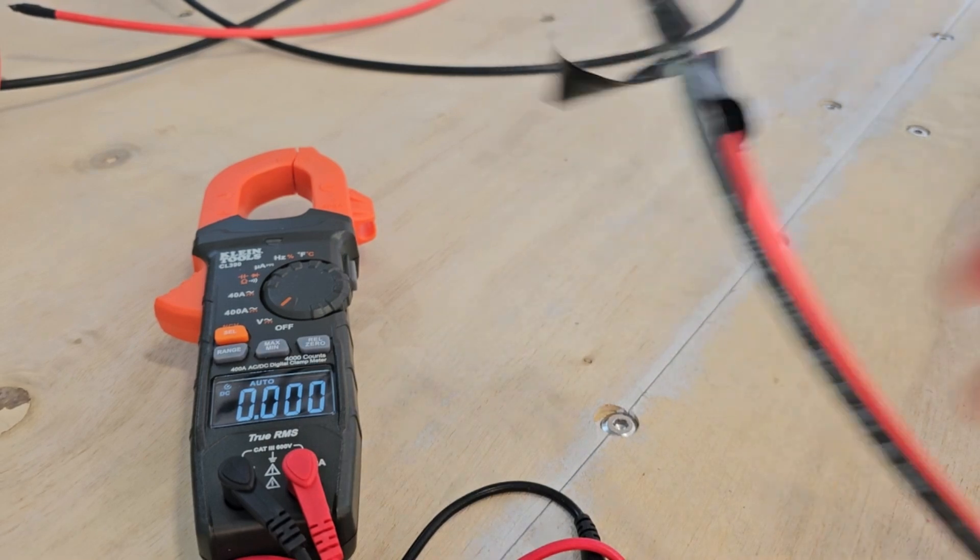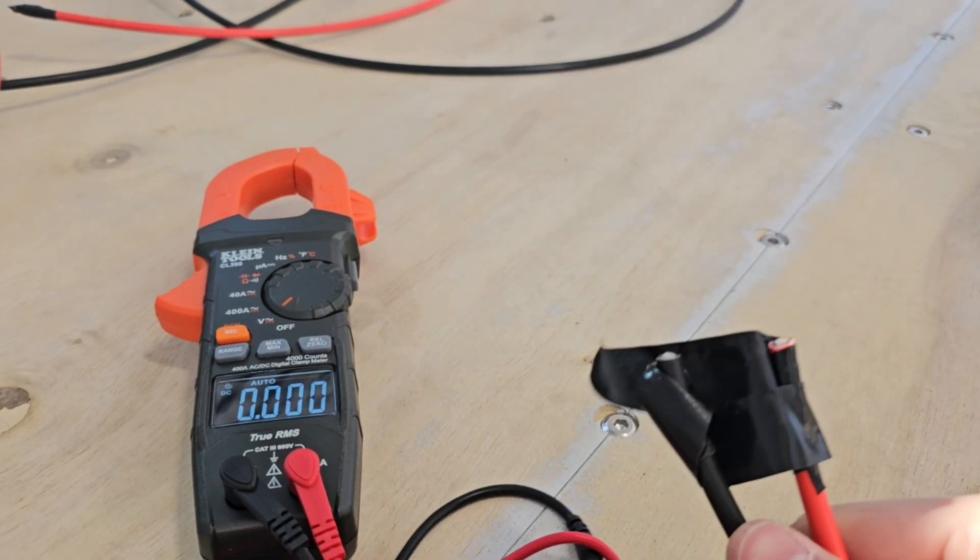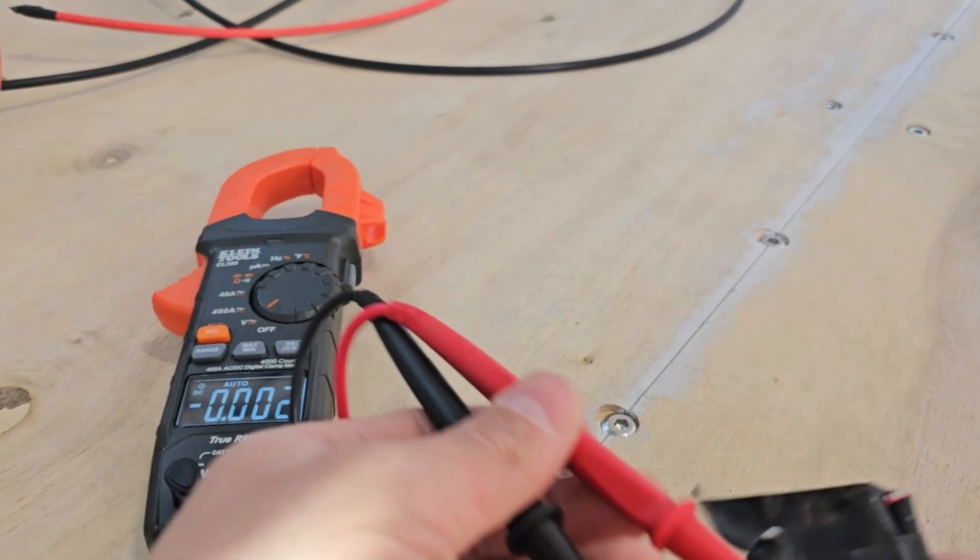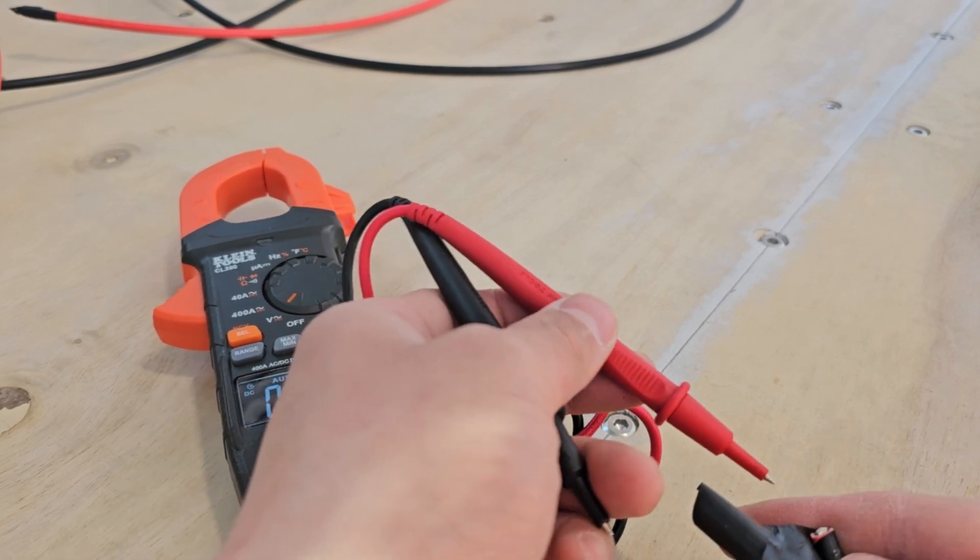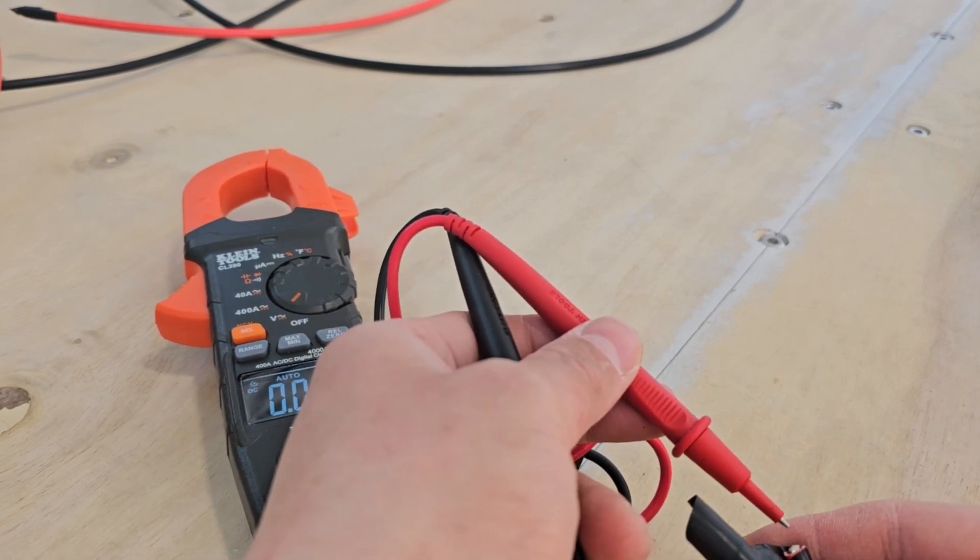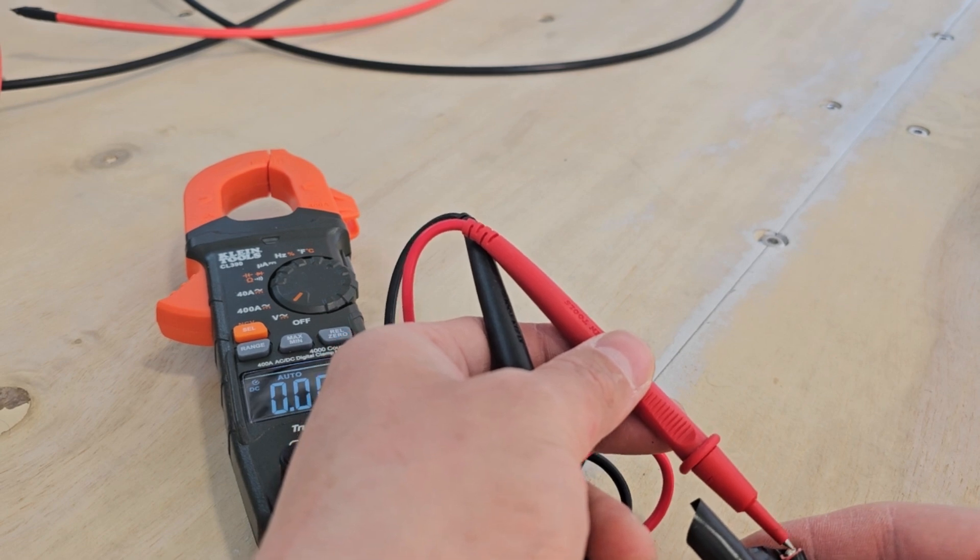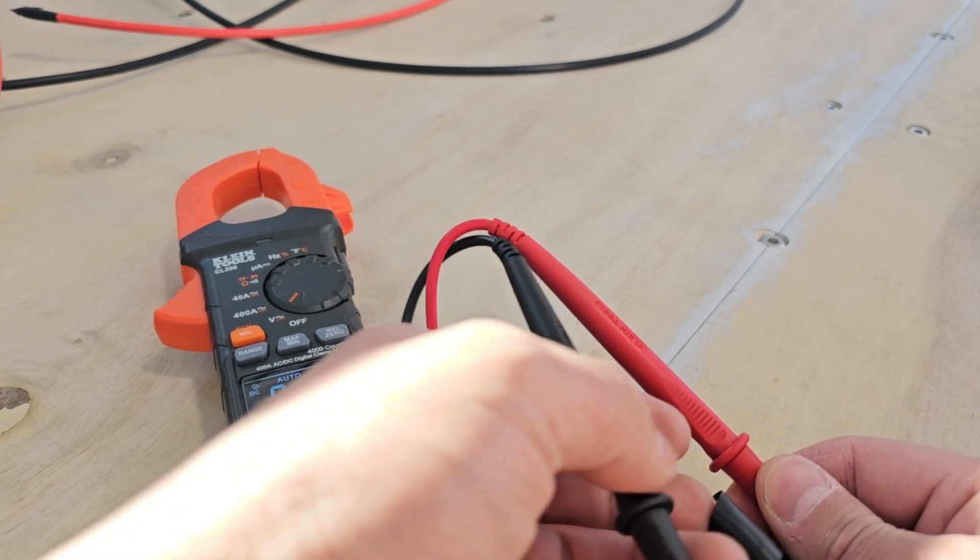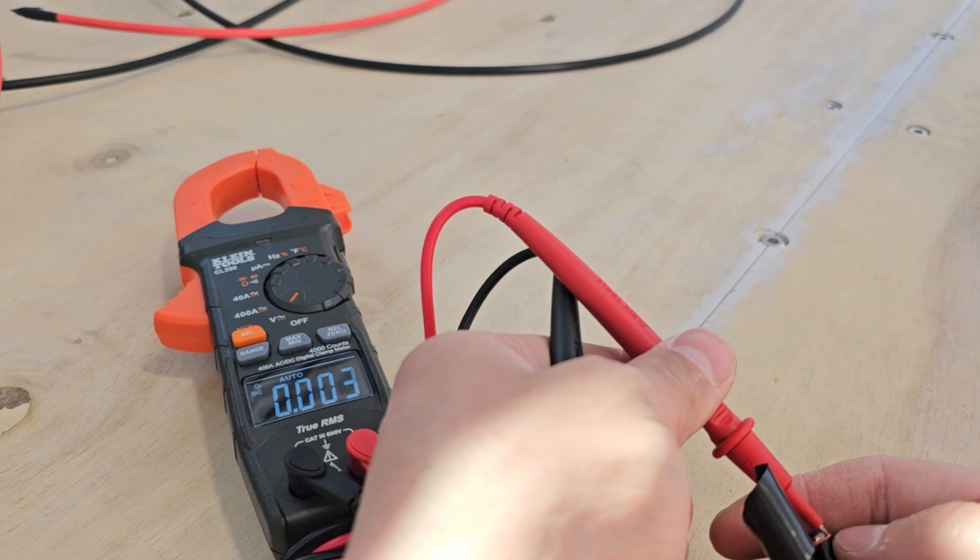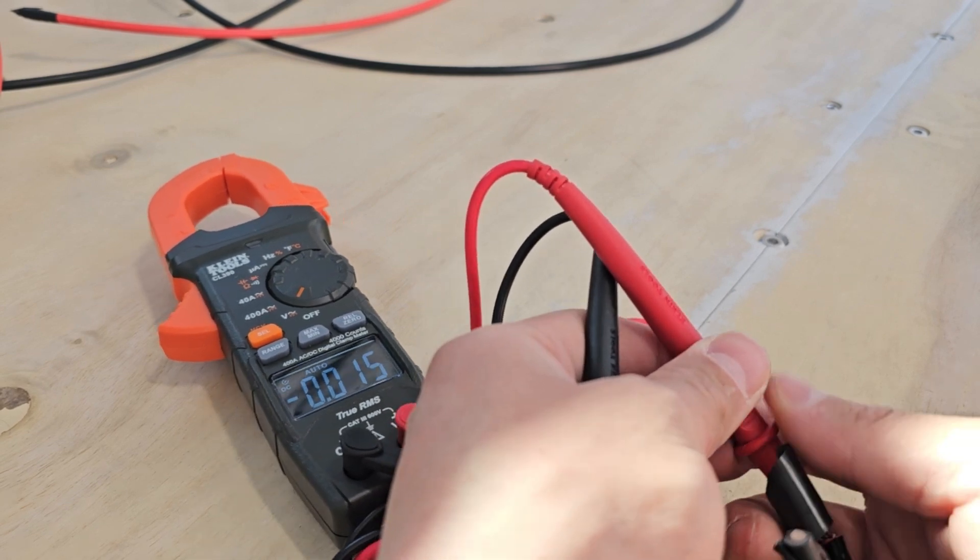And here are the two wires from the 250-watt panels. And like I said, I'm looking for 19 plus 19, 38 volts, is what the specs say. So 38 volts or more, I'll be happy.